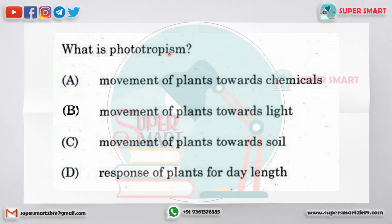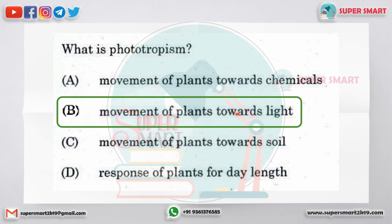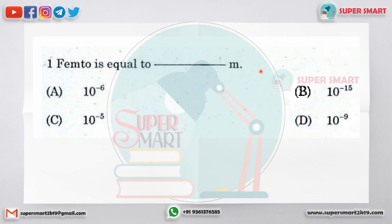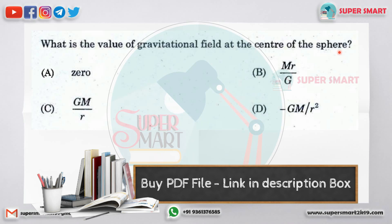Next question: what is phototropism? Also, 1 femto is equal to dash meter. And regarding a sphere, where is the gravitational field? The gravitational field at the center of a sphere is equal to zero.